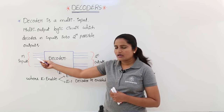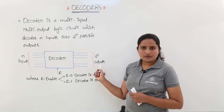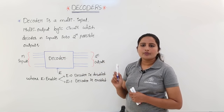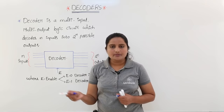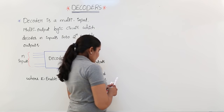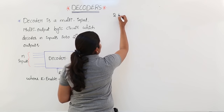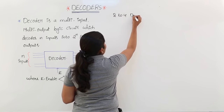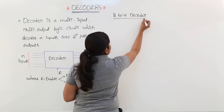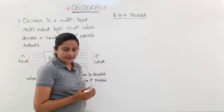For example, if you are given 2 inputs, you are having 4 outputs, and that input will be present at any one of the output lines. Here we can observe a 2-to-4 decoder. I am taking a 2-to-4 decoder design as an example.